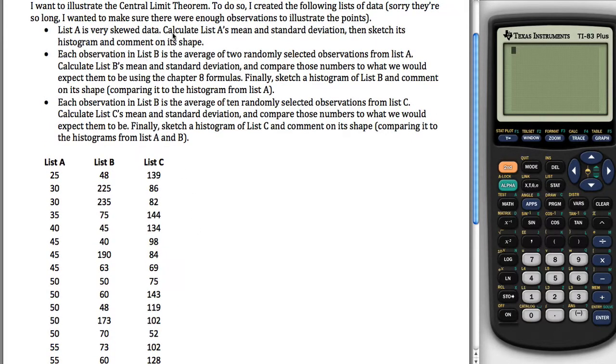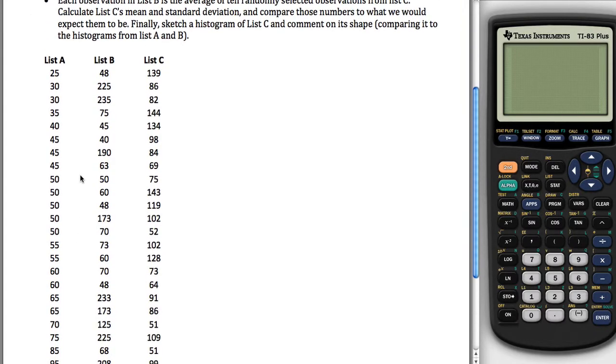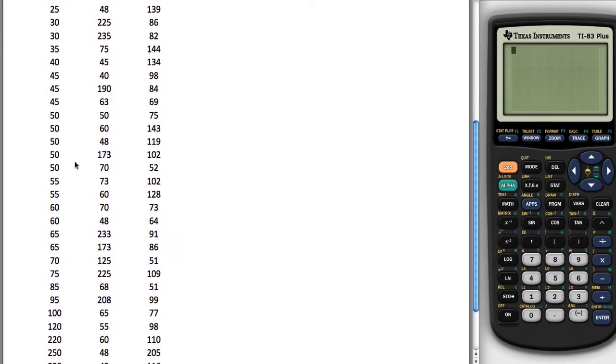List A is very skewed. I didn't say - it should be very right skewed, I might have just screwed that up. But at any rate, I have this list of very skewed data.